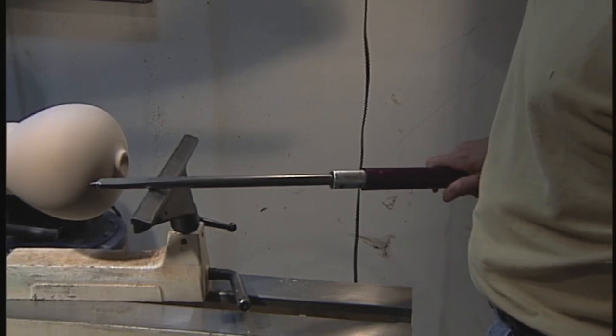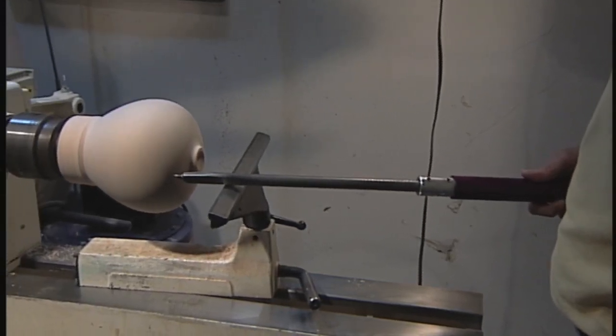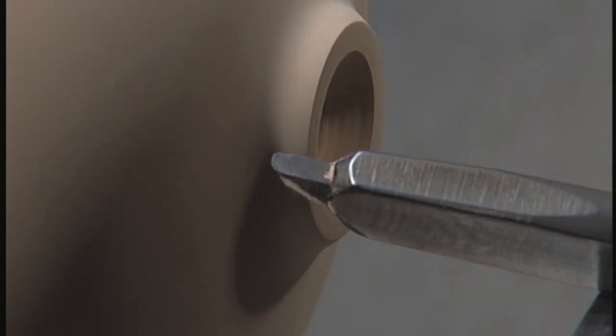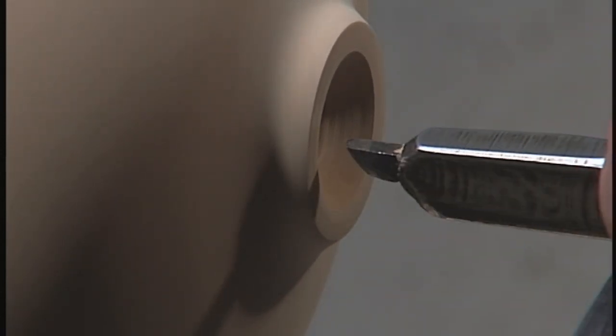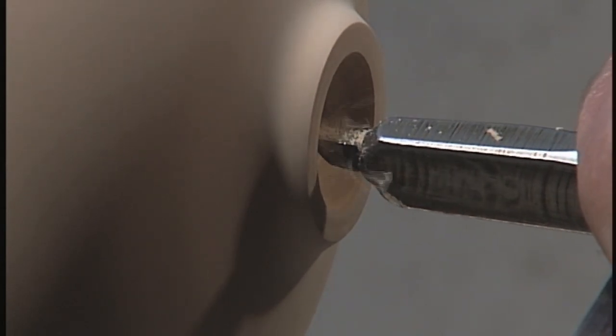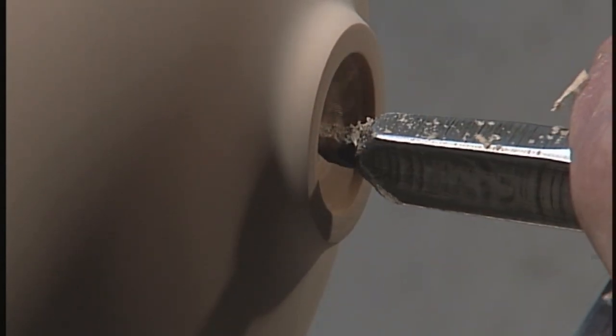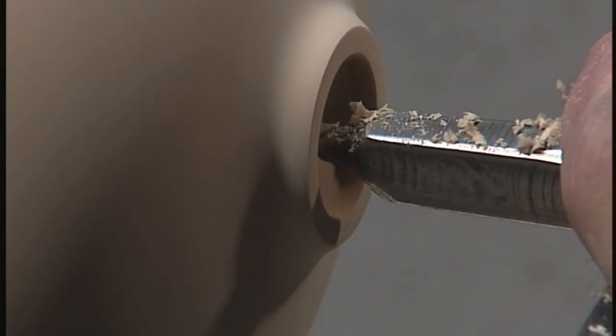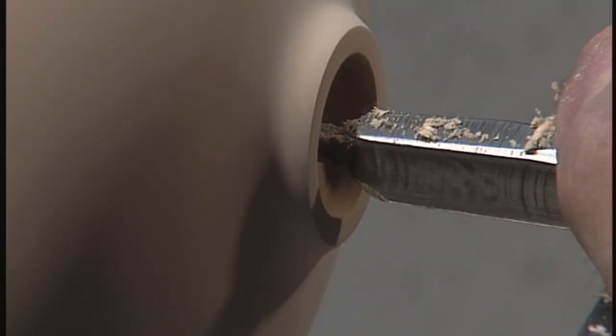We're using the Trent Bosch 5/8 inch bar here with a little high-speed steel cutting tip. Make sure you keep your tip nice and sharp, and we're just going to go where we started with that one inch opening, and we're just going to start opening it up. Starting at the center where we started that pilot hole and just opening it up.